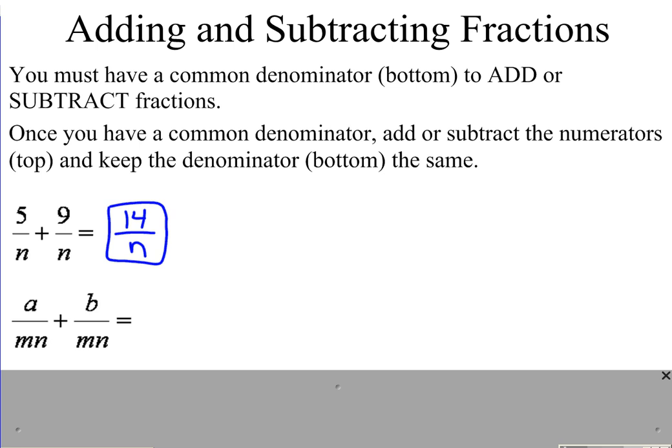Second one, a over mn plus b over mn. The common denominator already is there. Simply add the tops. We get a plus b over mn.